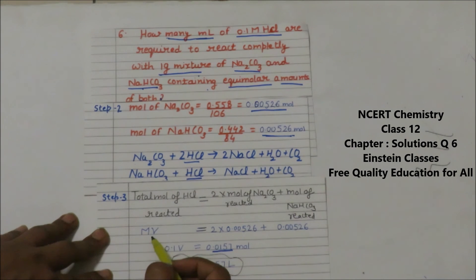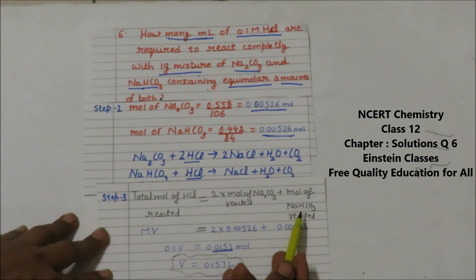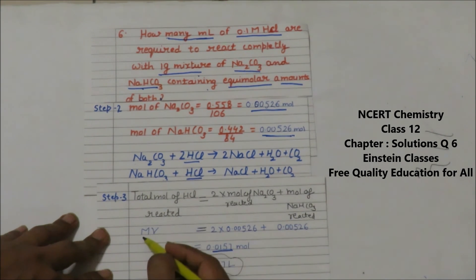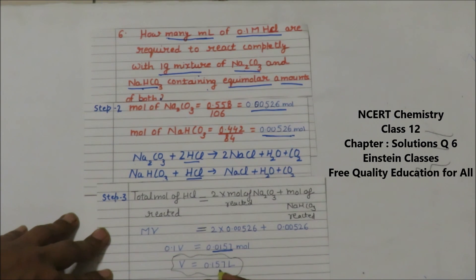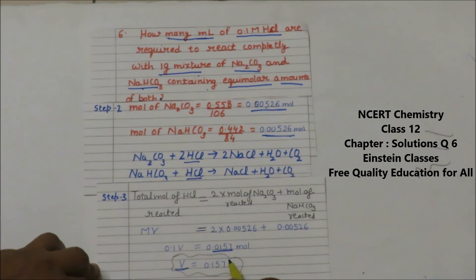Our aim is to find the volume of HCl solution needed to completely consume the sodium carbonate and sodium bicarbonate. Using moles = molarity × volume: 0.0157 = 0.1 × V, so V = 0.157 liters. This is the volume of HCl required to react completely with the 1 gram mixture of Na₂CO₃ and NaHCO₃.